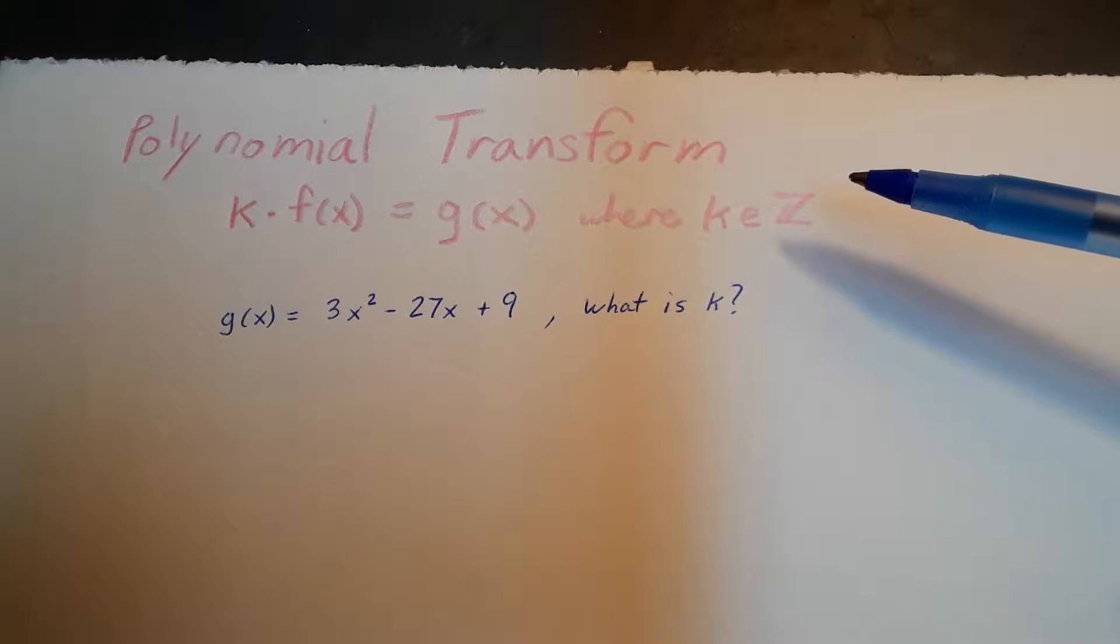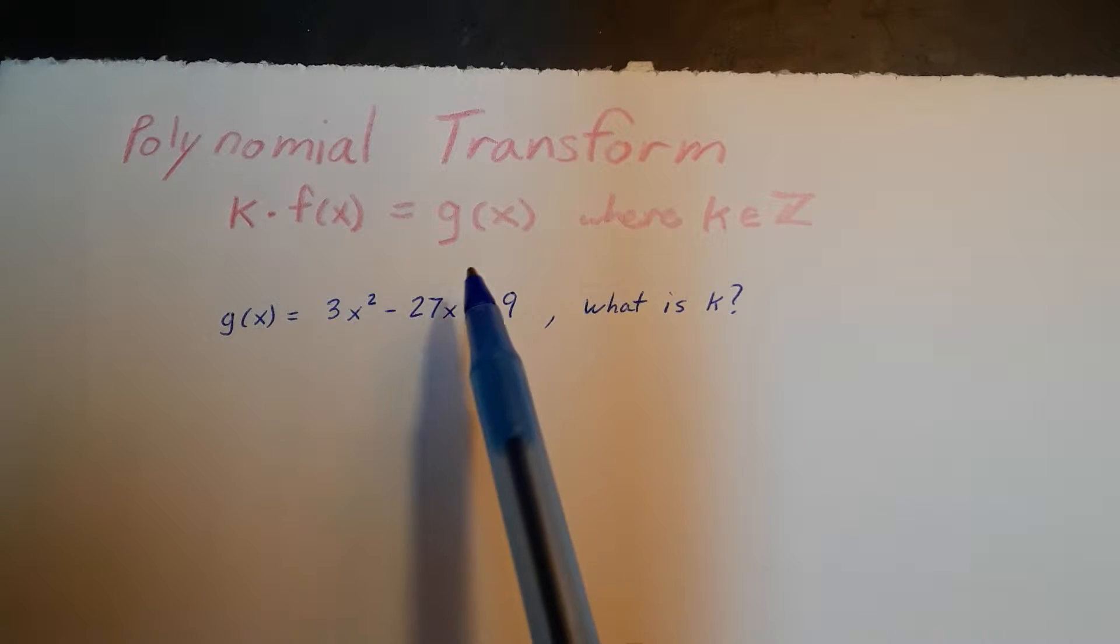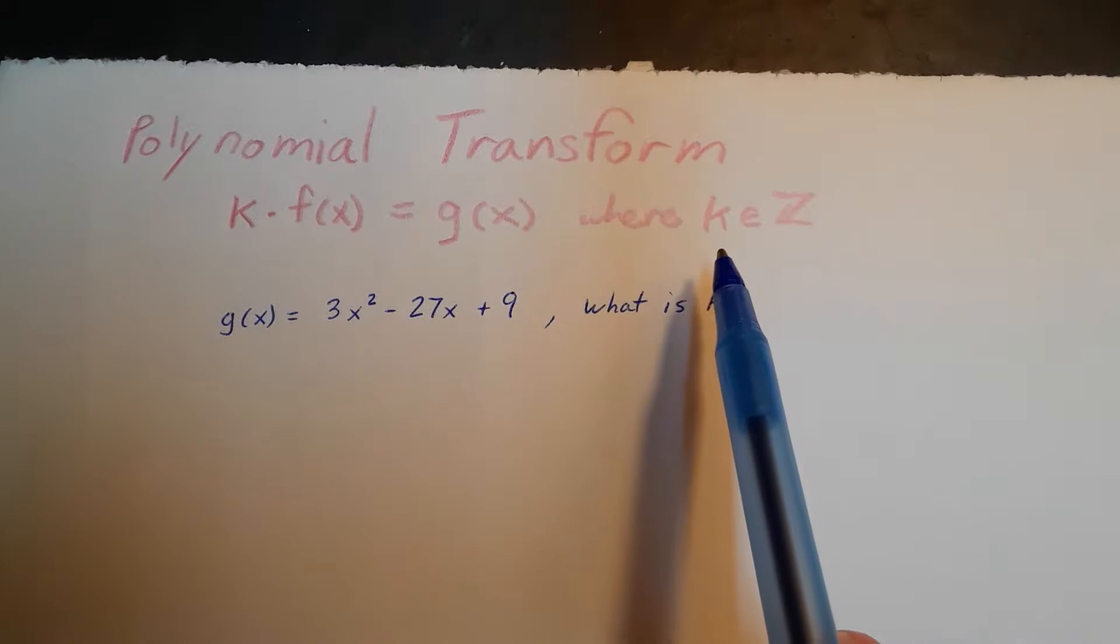One of the rules for polynomial transforms is that k times f of x will give us g of x, where k is just an integer.